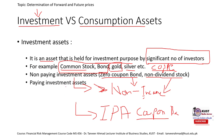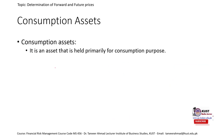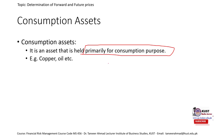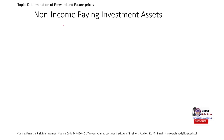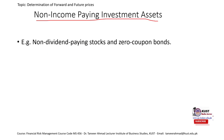So we have income-paying investment assets and non-income-paying investment assets. Consumption assets — as already discussed — are assets held primarily for consumption purposes, such as copper, oil, and other commodities. Investment assets are further divided into non-income-paying and income-paying subcategories. We start with non-income-paying investment assets to understand how to estimate their forward or future price — this is the simplest form of calculating the forward price.